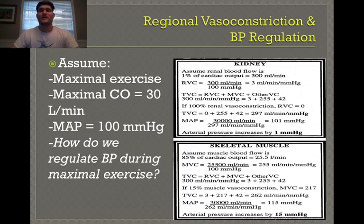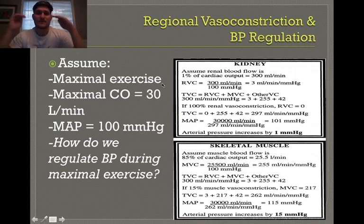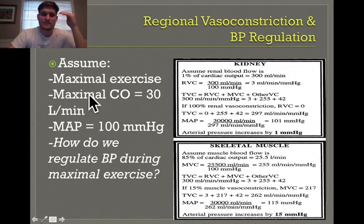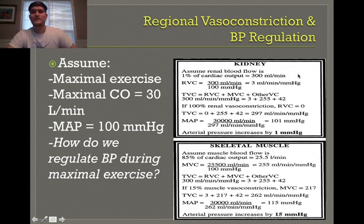Mean arterial pressure is the primary regulated variable of the cardiovascular system. As exercise intensity increases and we reach the maximum limit, how are we able to regulate blood pressure? For example, if maximal cardiac output is 30 liters per minute and mean arterial pressure during that period is 100 mmHg, how do we regulate blood pressure at max exercise? Let's look first at regions of the body that we tend to vasoconstrict.